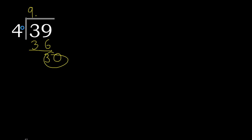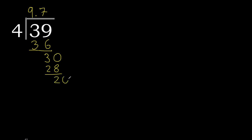4 multiplied by 8 is 32, which is greater. Multiplied by 7 is 28, which is not greater. Subtract, and always complete with 0.